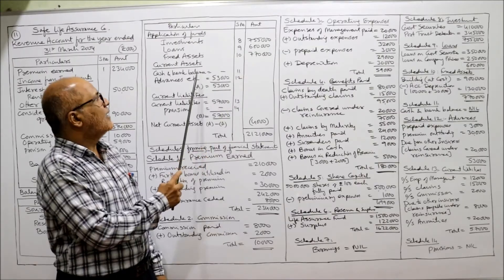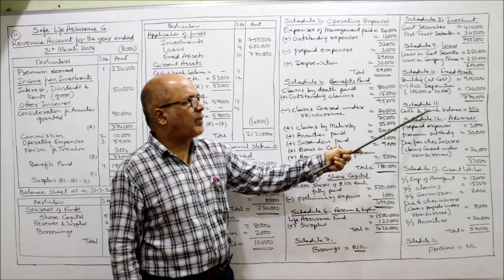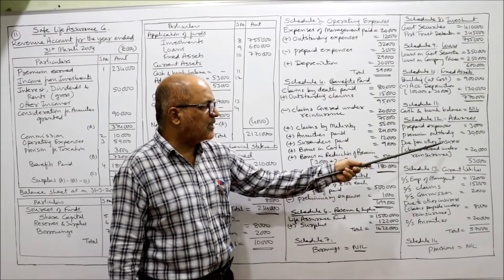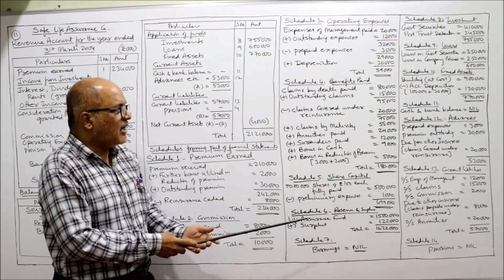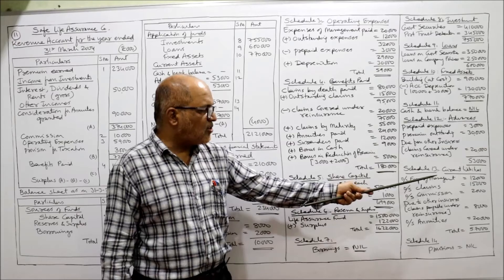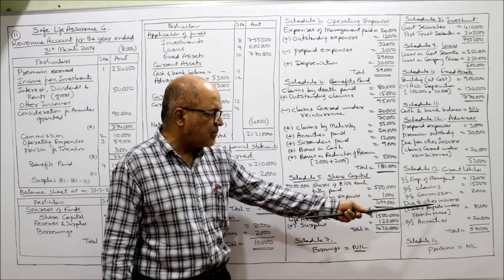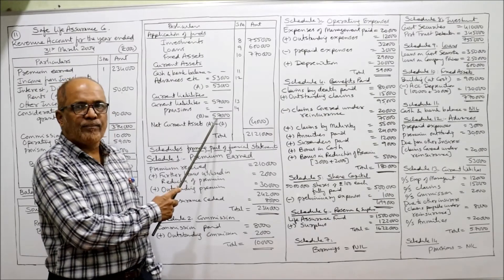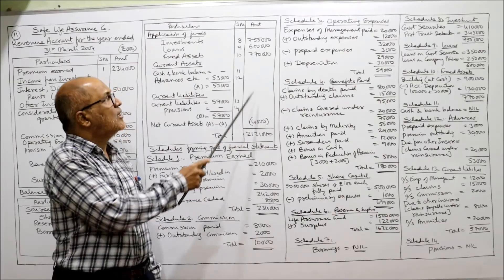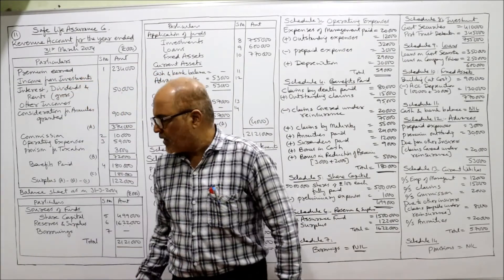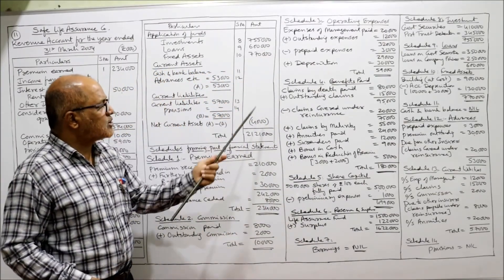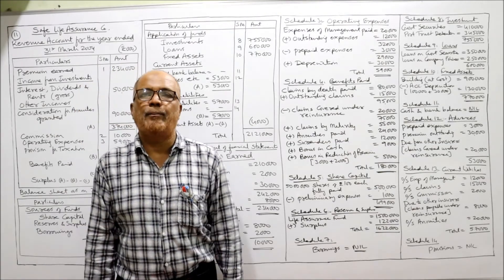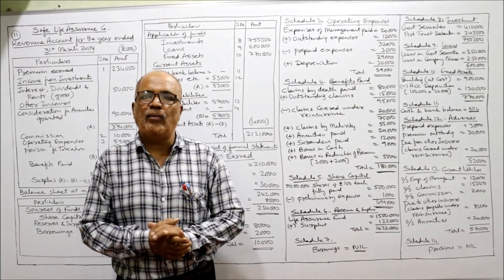Fixed assets — Schedule 10: building at cost 9,00,000 less accumulated depreciation 1,30,000 equals 7,70,000. Cash and bank balances — Schedule 11: nil. Schedule 12, advances and current assets: prepaid expenses, premium outstanding, due from other insurers (claims covered under reinsurance) — total 53,000. Schedule 13, current liabilities: outstanding expenses of management, outstanding claims, outstanding commission, due to other insurers — total 57,000. Net current assets: 53,000 minus 57,000 equals minus 4,000. Total balance sheet: 21,21,000. This concludes problem number 11, the last problem on the revenue account and balance sheet.